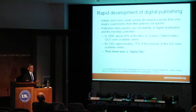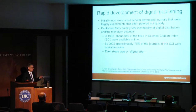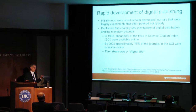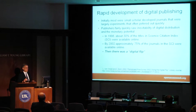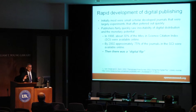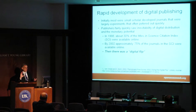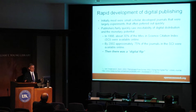As Van Orsdel and Born pointed out in 2002, what happened was what they called the 'digital flip.' Prior to this point, when traditional publishers put journals online, you often had to buy the paper version and then received the online version. But about this time, librarians and library consortia started saying they wanted the electronic version primarily. So within 10 years, we had switched to what was, at least in pricing terms, a predominantly electronic system.